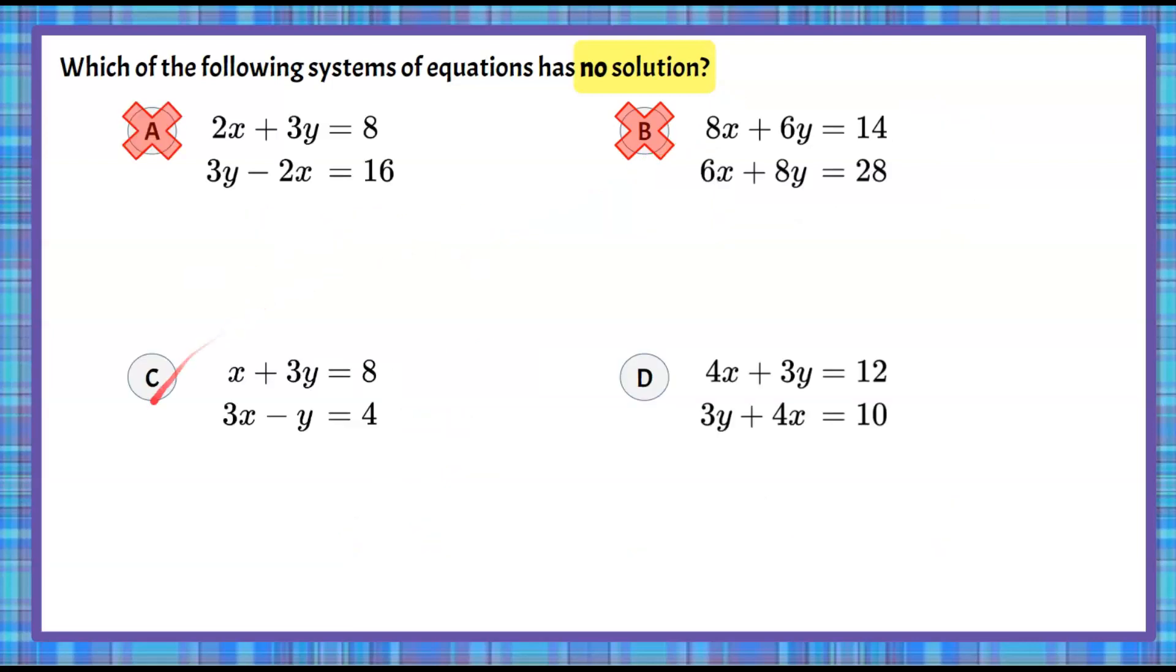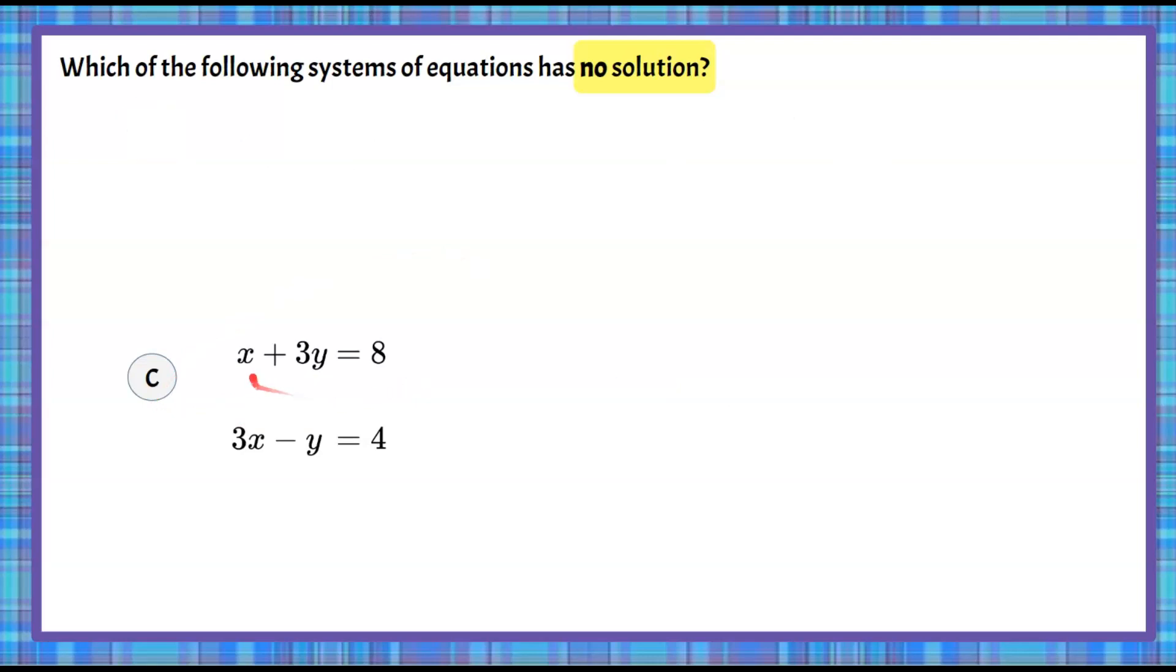Looking at answer choice C, let's clear our board and look at just C. We can see that our x's and our y's are lined up, but they don't have any like coefficients. I like opposite pairs. You could do the x's, but I like the y's because they have opposite value signs. I'm going to multiply everything in the second equation by 3 to force opposite coefficients.